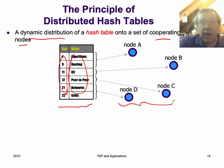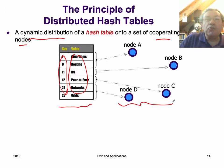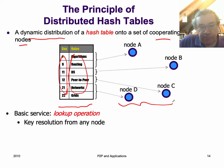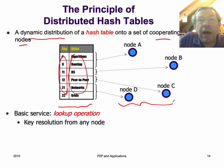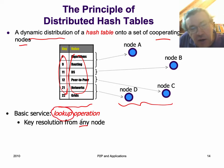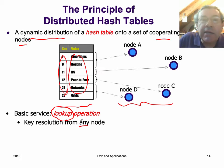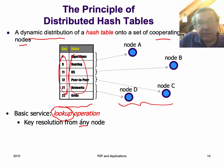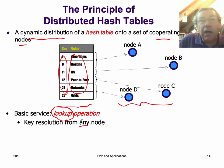We're distributing the hash table so each node — A, B, C, and D — will store part of the hash table. We provide a lookup operation, meaning any node can look up any key in the hash table. If you look up a given key and it's at the node where you are, you get the value immediately. But if it's not at the node, you will do routing.